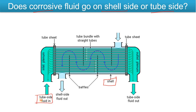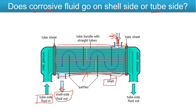We have discussed the shell and tube heat exchanger in our last videos. Before we come to the answer, let's understand the basics. This entire portion is the shell. The shell side fluid will enter from here and exit from here — it flows through this region on the shell side.